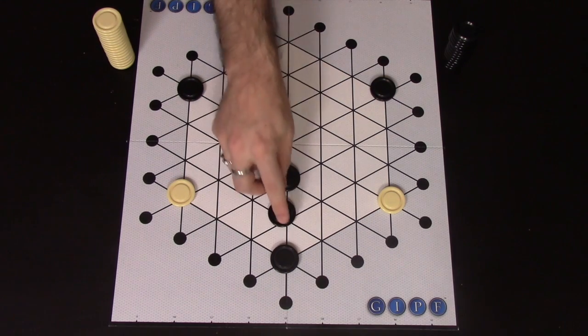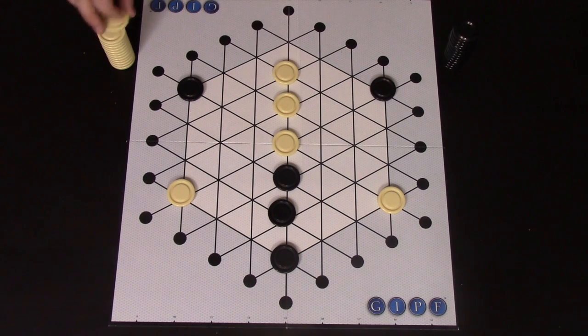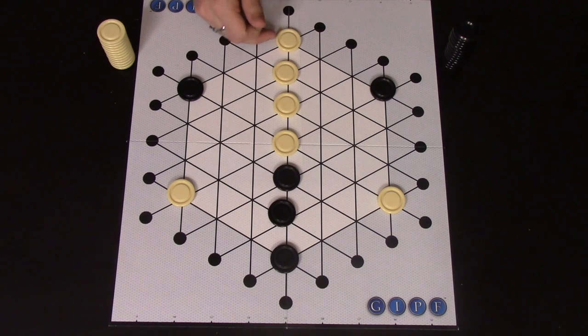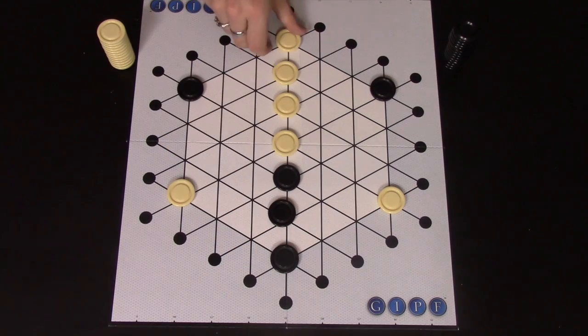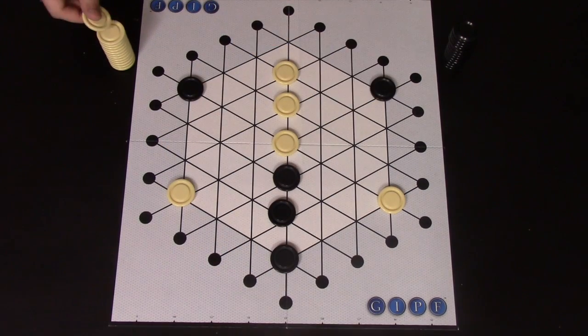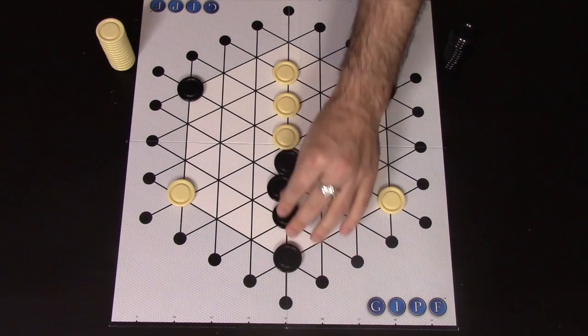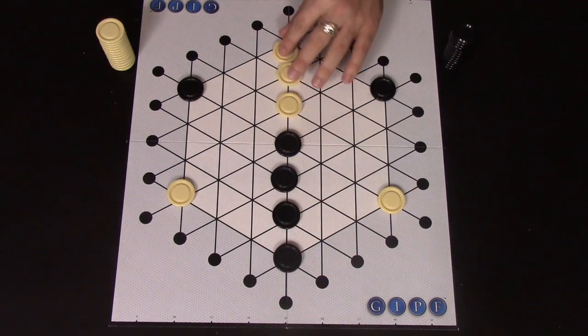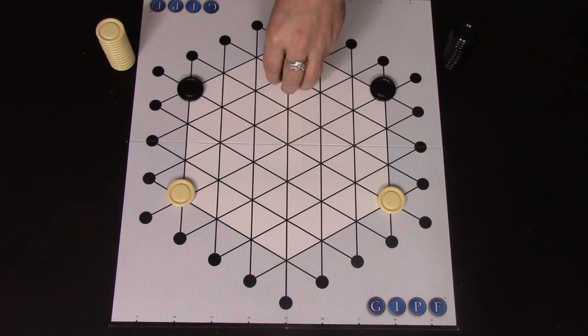If this was a situation, and it was white's go, if white then created four in a row, white would remove four of their pieces, plus three black pieces. But you've got to be careful, because if it was black's go in the same situation, black could push one piece on the end here, effectively moving all these down. Black would take four of their pieces off, and would capture three white pieces.